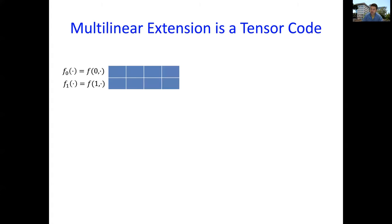It's going to be useful for us to view the multilinear extension as a tensor code. This is a well-known connection. If you're not familiar with tensor codes, it doesn't matter. I'm going to define everything here. Remember the input is a truth table of this function f from 0,1 to the m to 0,1, a boolean function. I split the function into two rows where the first row is the first half of the truth table and the second row is the second half. In other words, the first row is what you get if you restrict the first variable, fix the first variable of the function to be 0. We'll call that the function f0. The second row is what you get if you fix the first variable to be 1, and we'll call that f1. That's our input f.